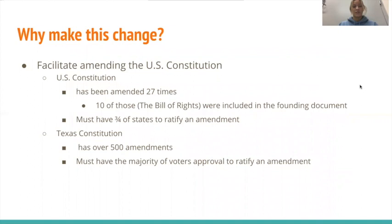This change would be so important because it would overall facilitate the amending process of the U.S. Constitution, which has only been amended 27 times — 10 of those being the Bill of Rights, which were included in the founding document — versus the Texas Constitution, which has been amended just over 500 times. We see this large difference because of the process it takes to ratify amendments.